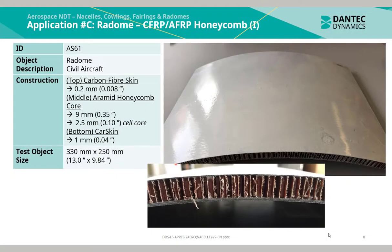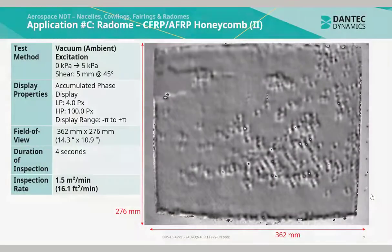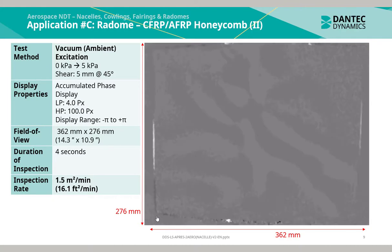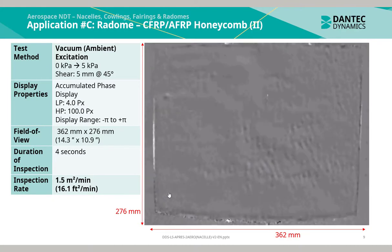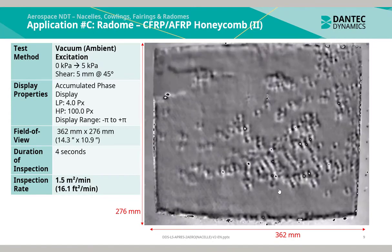This is an application of a carbon fibre reinforced plastic skin and aramid fibre honeycomb radome. The test object size is 330mm by 250mm. Vacuum ambient excitation was applied from 0 to 5 kPa. The inspection duration was 4 seconds and the inspection rate was 1.5m² per minute. What is notable is that the individual cells of the sample are detectable using laser serigraphy, making it very clear where cells become disbonded, where no-bond splits occur, and also areas of fluid ingress.